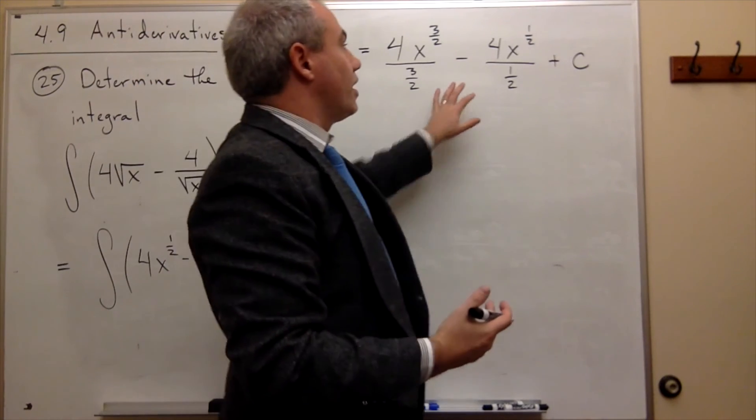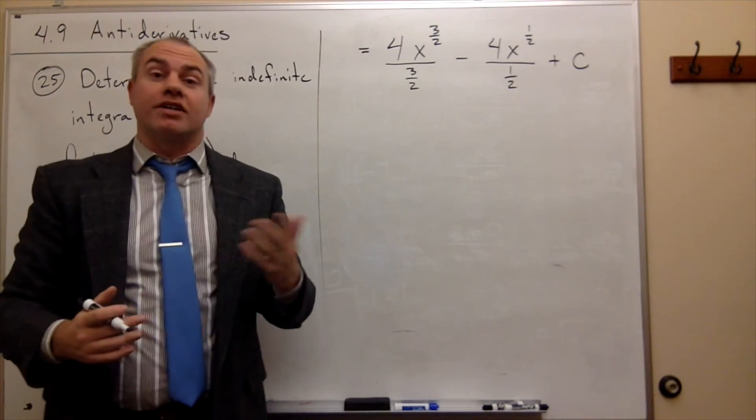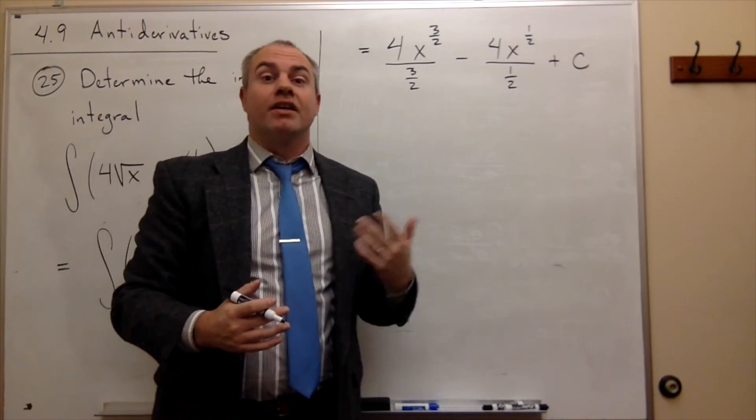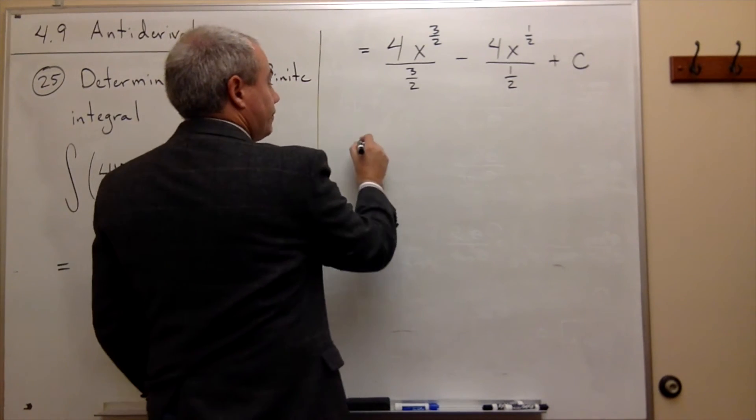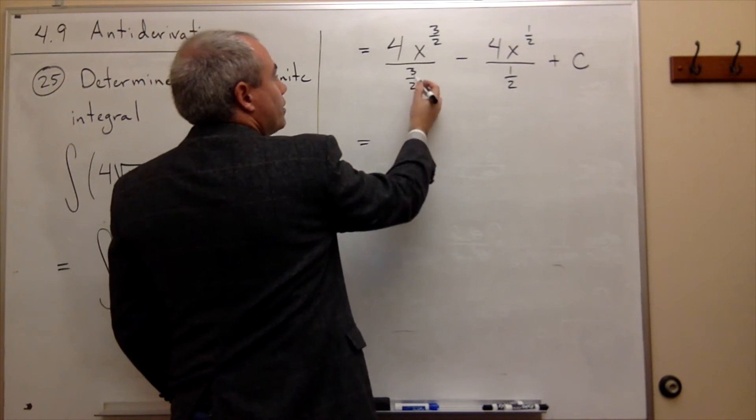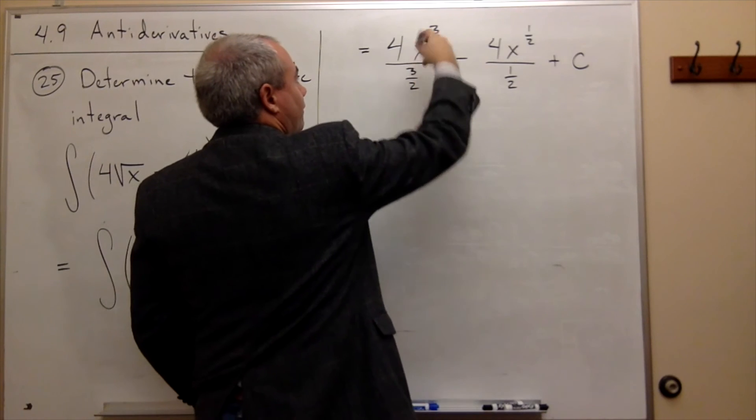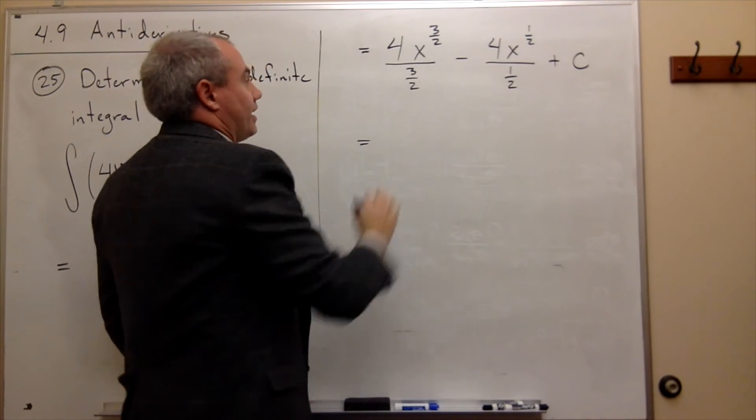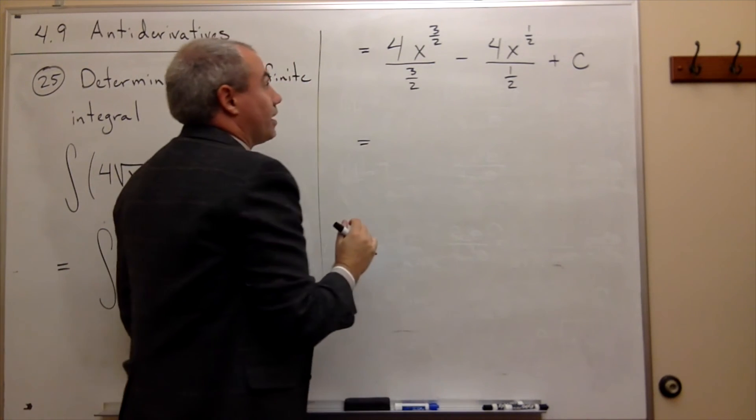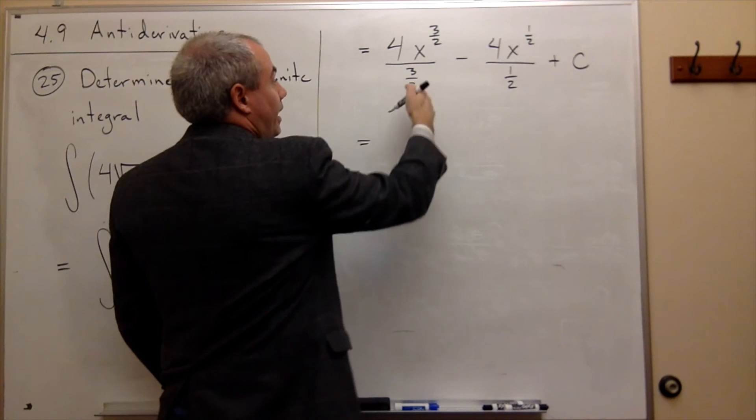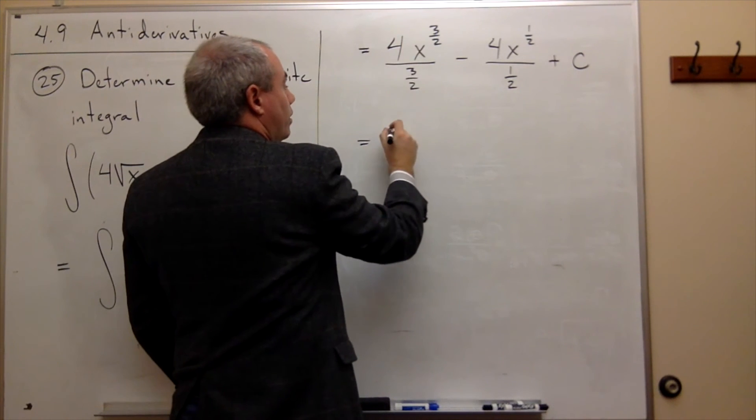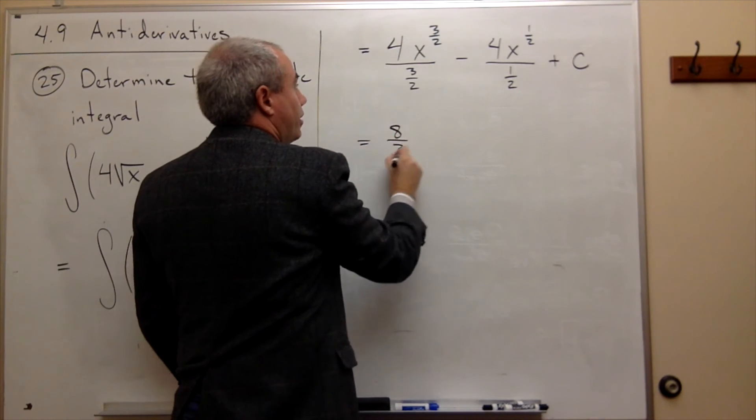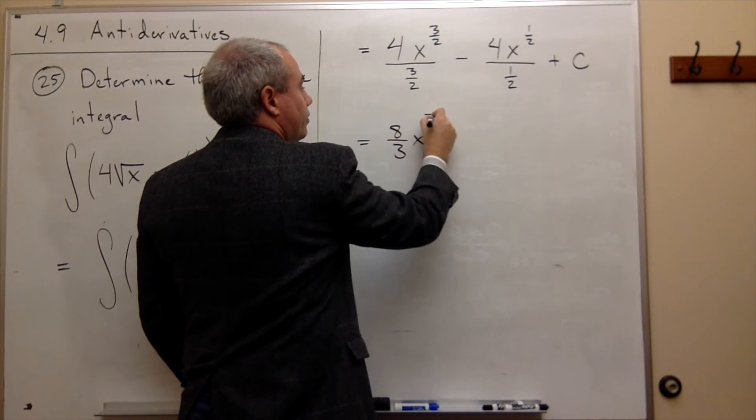So this is the answer. It's not in a very pretty form, so let's just rewrite it one more time and make it look a little nicer. 4 divided by 3 halves, I would flip and multiply, and so it's the same as multiplying by 2 thirds. And 2 thirds times 4 is 8 thirds x to the 3 halves.